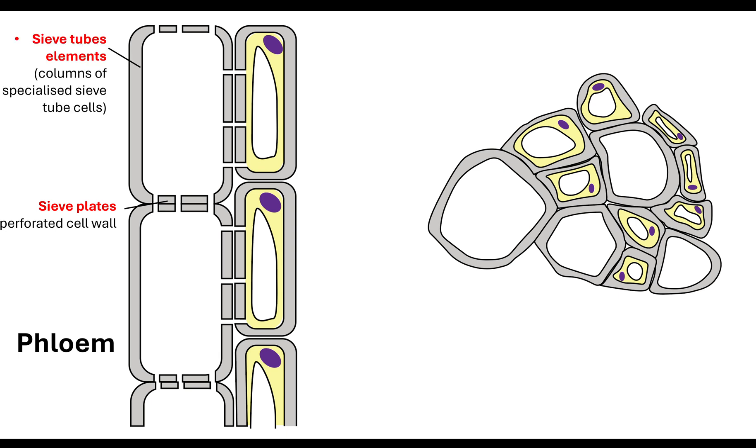The column of these specialised sieve tube cells is actually called the sieve tube element. That's the name you want to give when you are talking about the phloem. The phloem is made up of these sieve tube elements, these columns of specialised cells. Now the difference between the phloem and the xylem is that the phloem is living. It's not dead like the xylem vessel was. However, it has reduced its cytoplasm, it does not have a nucleus or organelles. So what is it that makes it living?